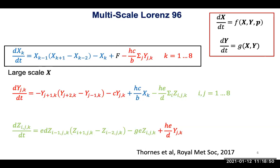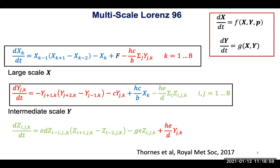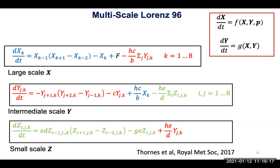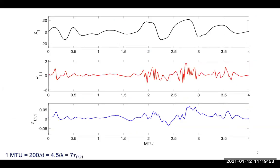There's a forcing term F, which you can think of as anthropogenic or radiative forcing — this determines how chaotic the system becomes. There's an intermediate scale y with 64 grid points: for each grid point in x, there are eight grid points in y. Then you have ultra small scale terms z — think gravity waves, things current climate models can't resolve — with 512 grid points total. This is a fairly high dimensional system with three spatial and three temporal scales. The large scale forcing F acts as the parameter p controlling how chaotic the system is.